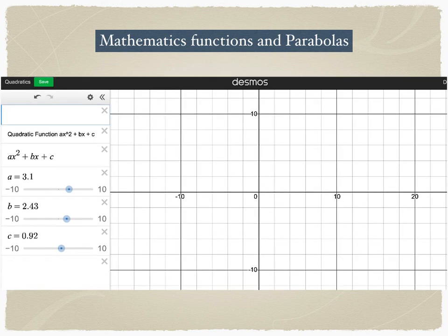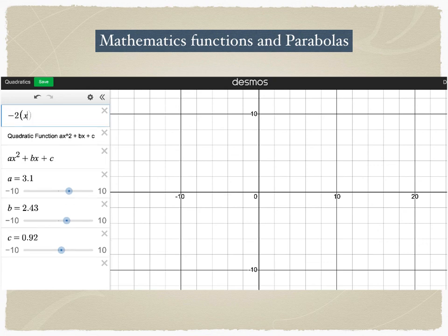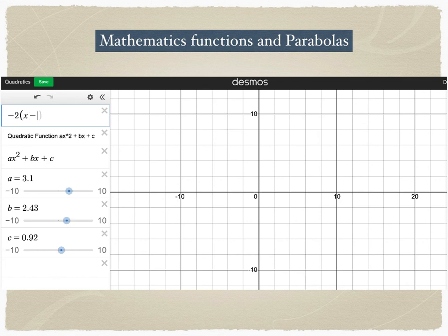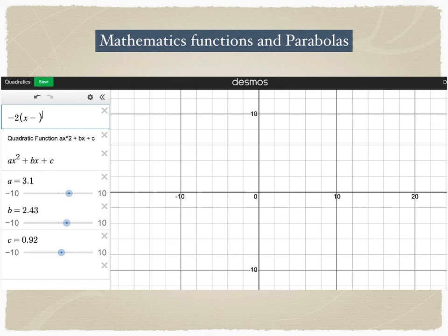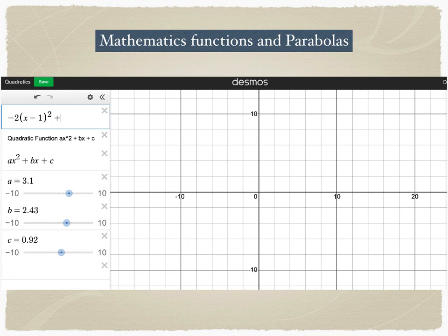You might be wondering how we can use mathematics to describe or depict a parabola shape. Let's look at an example. If I graph negative 2x, I get a line. But if I raise the power of the variable x to 2, I start to see a parabola. If I move it up by 5 units, this is the graph of a parabola using a mathematical formula.